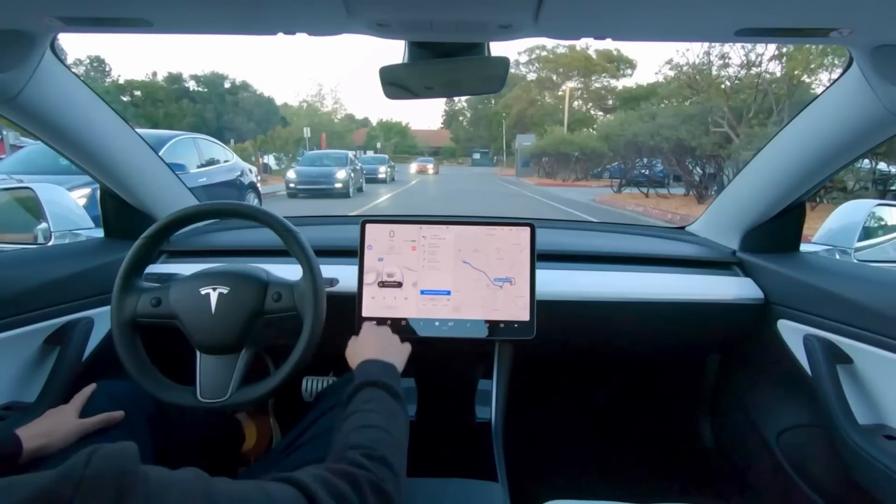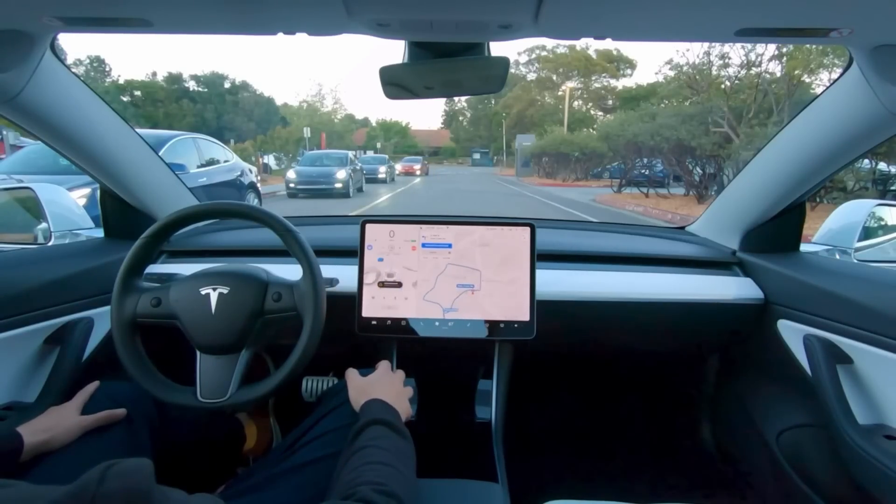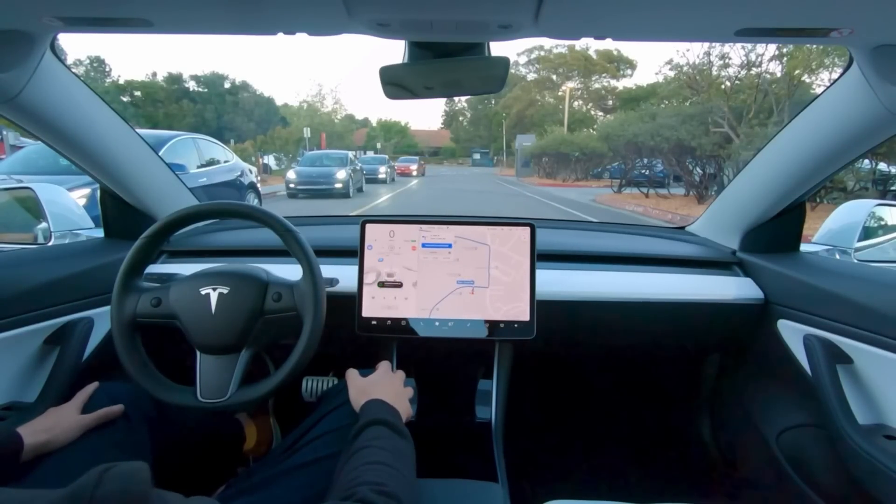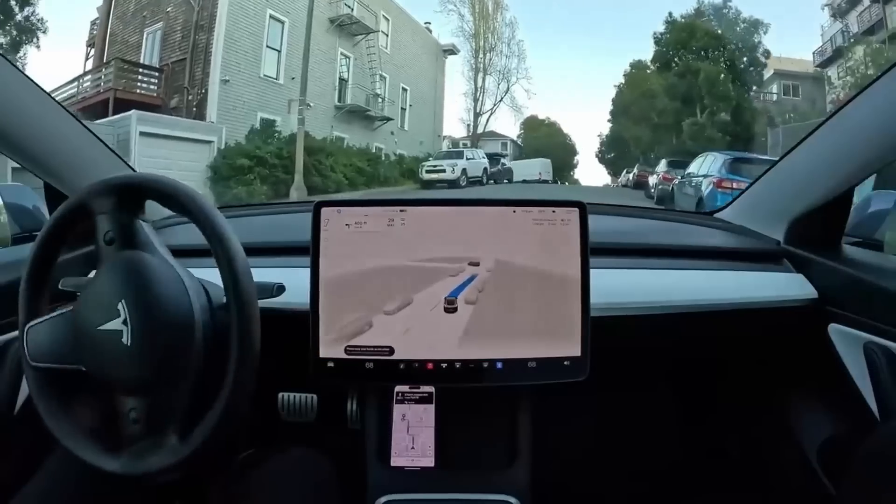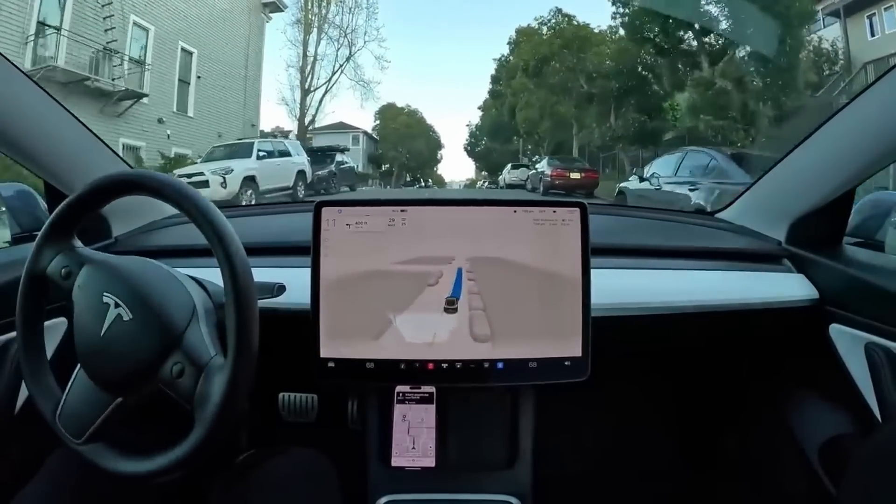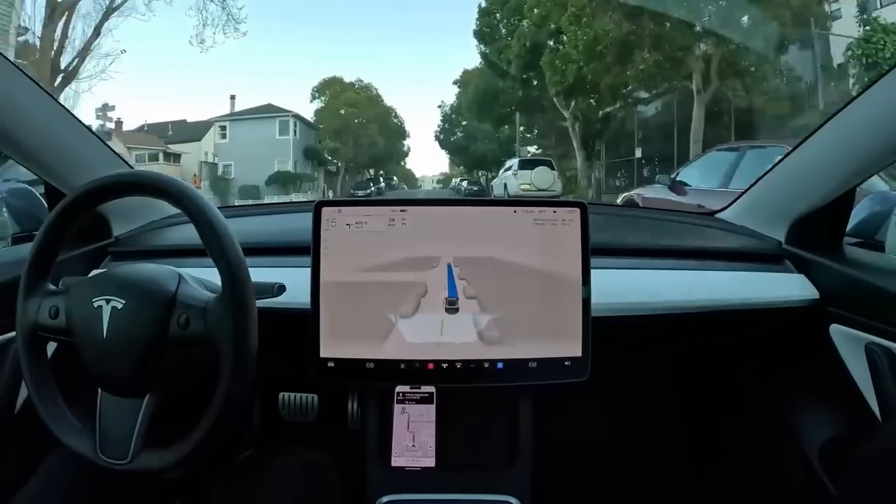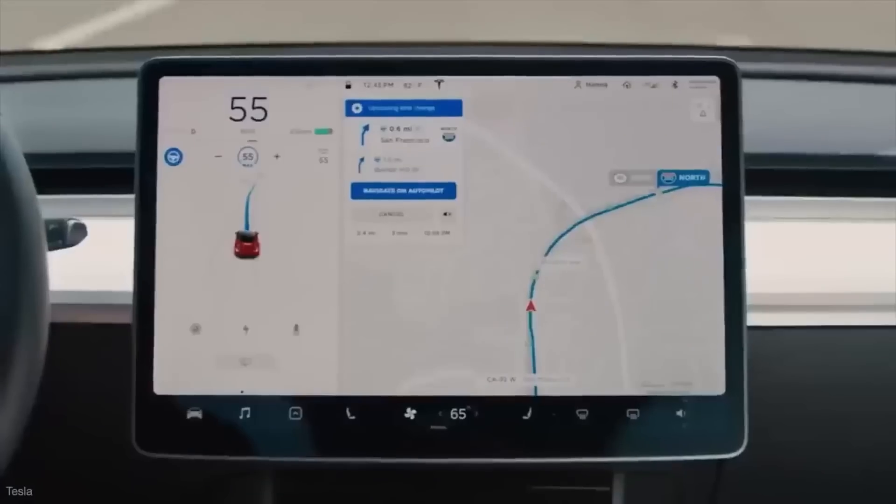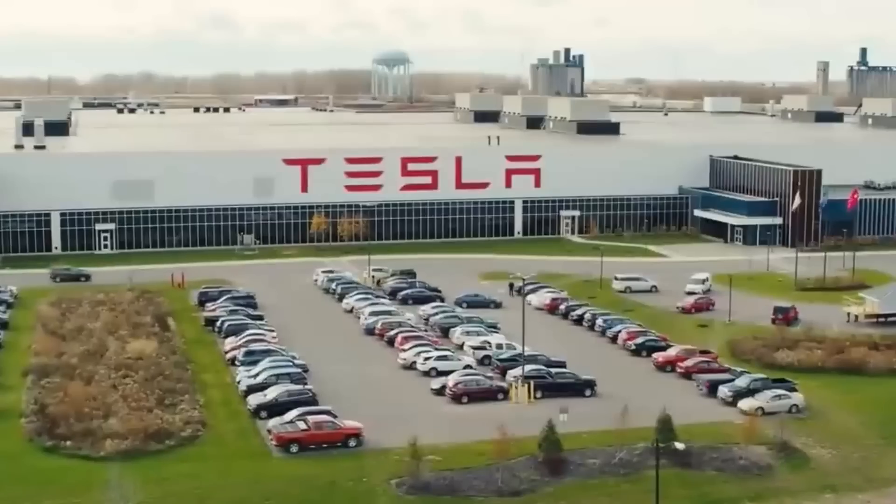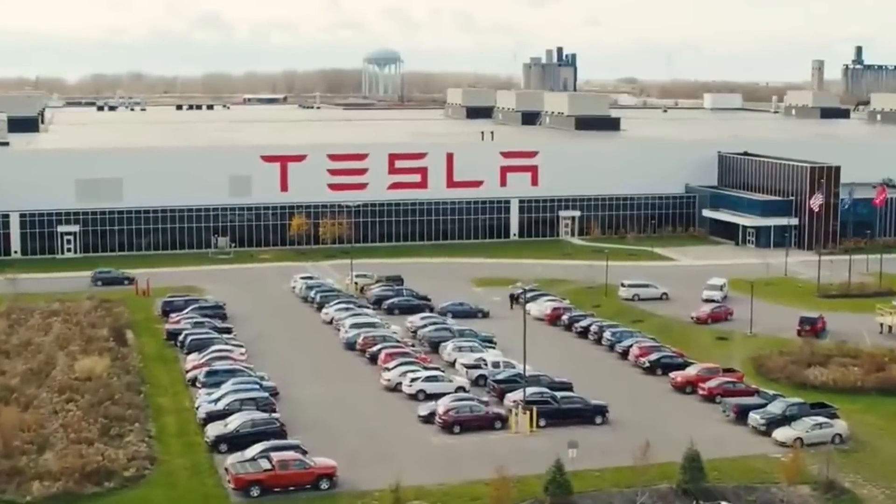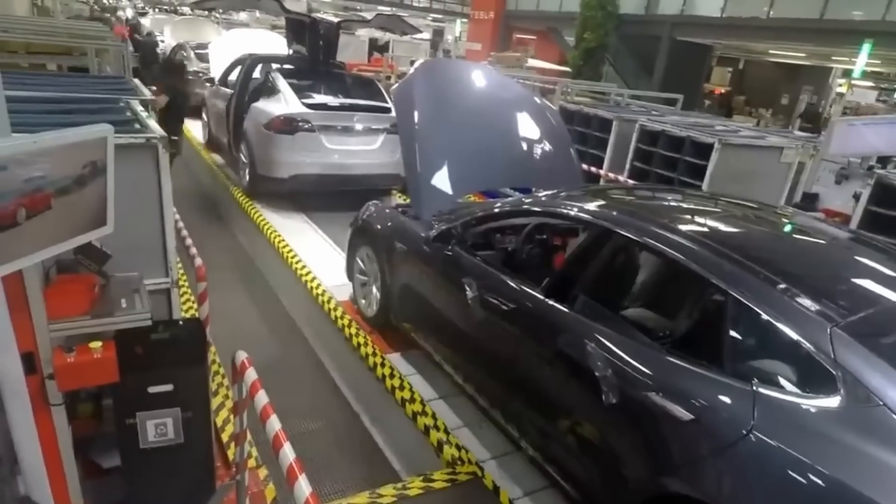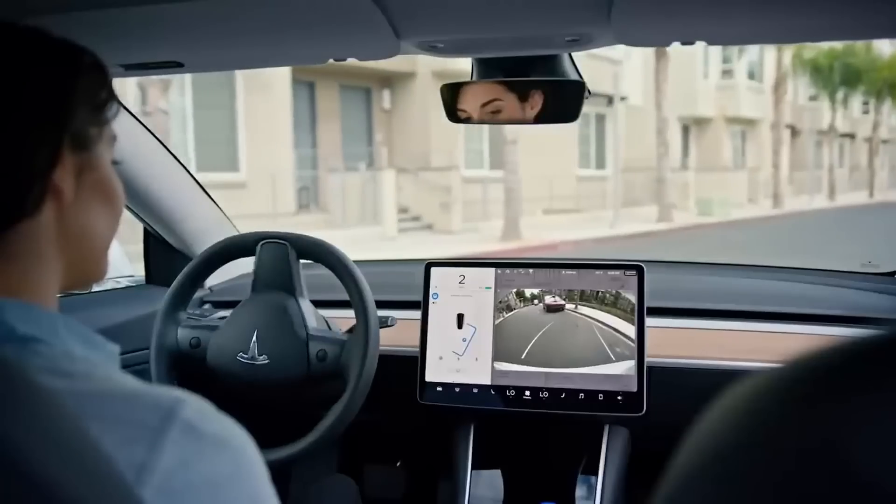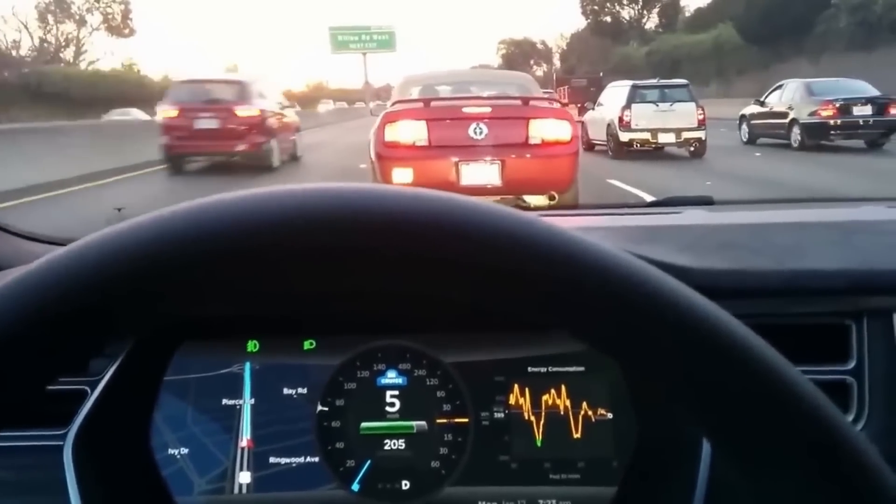Number 2. Tesla Autopilot. Tesla Autopilot represents a state-of-the-art driver assistance system that significantly enhances both safety and convenience while driving. This advanced driver assistance system suite, provided by Tesla, achieves international Level 2 vehicle automation. Notably, Autopilot is a standard feature included in all new Tesla vehicles, incorporating cutting-edge functionality such as Autosteer, Autopark, and Traffic-Aware Cruise Control.